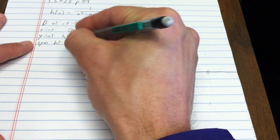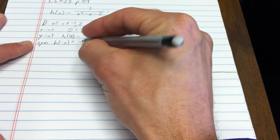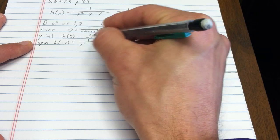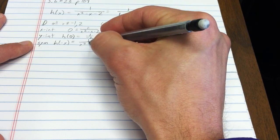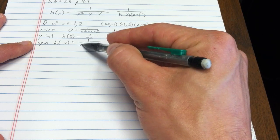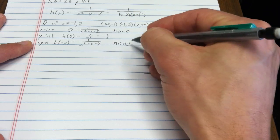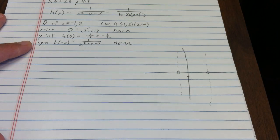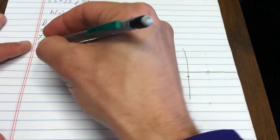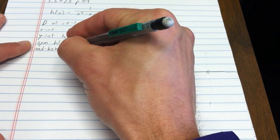Next I look for symmetry. h(negative x) = 1 over (x² + x - 2), which is neither equal to the function itself nor the negative of the function, so there is no symmetry.